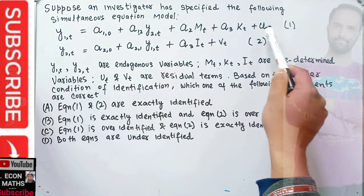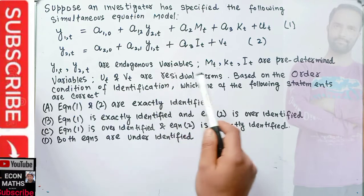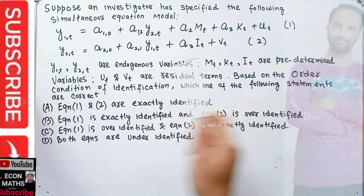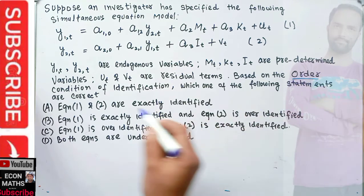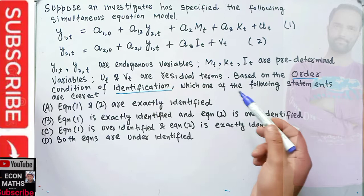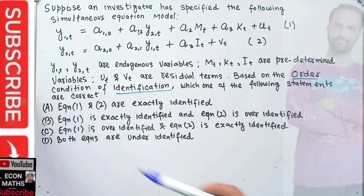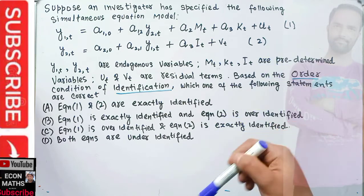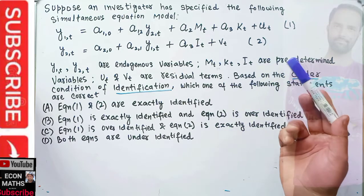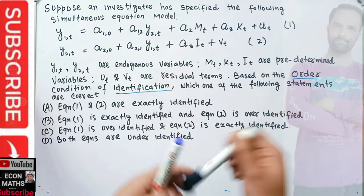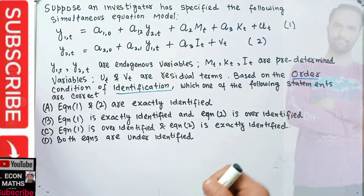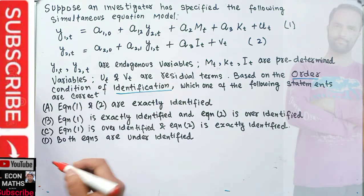Based on the order condition for identification, we need to determine which of the equations are exactly identified, over-identified, or under-identified. The order condition is straightforward. Let me write it here: the order condition involves the quantity k minus m.